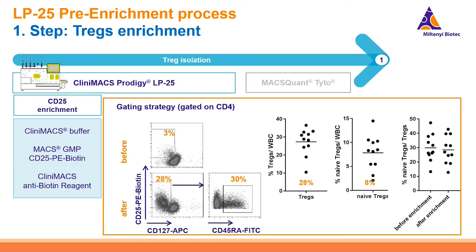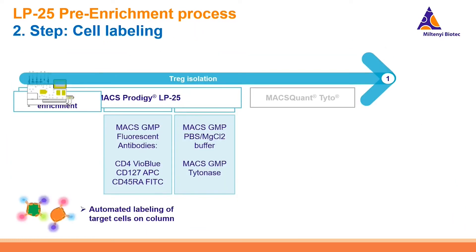Naive T-regs are a really tiny population of white blood cells. Looking at the gating strategy, starting with the cellular product there is only 3% of target cells, and after enrichment on the CliniMACS Prodigy we end up with 30% of T-regs. The next step is labeling with MaxGMP fluorescent antibodies — all of these steps are automated — and after that the cells are released into MaxGMP buffer for the sorting process.